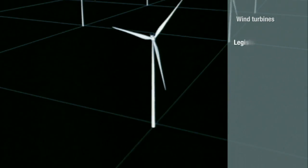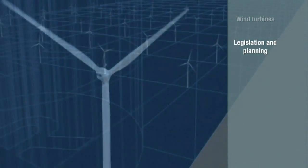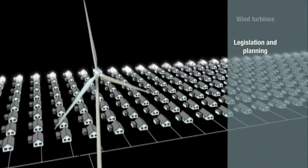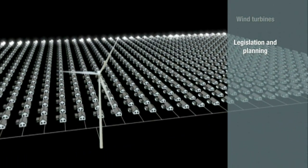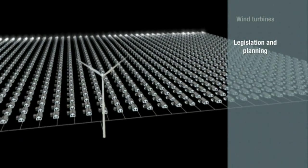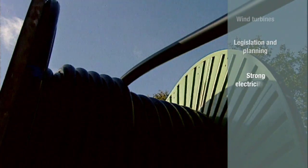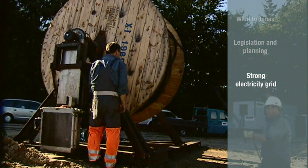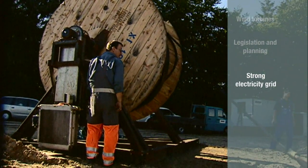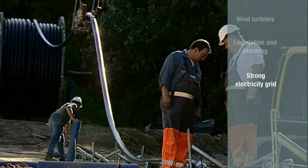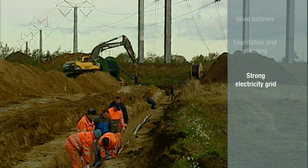Legislation and planning ensure that wind power is first in line to the grid, and a national plan establishes where wind turbines can be erected. A strong and well-developed electricity grid within Denmark and to the neighboring countries transmits energy from the wind turbines out to where consumers are.